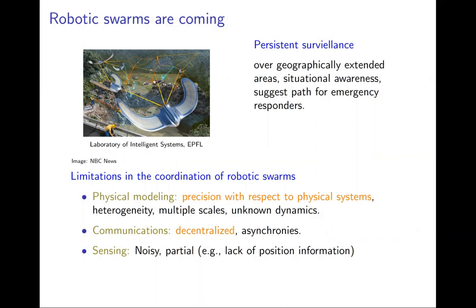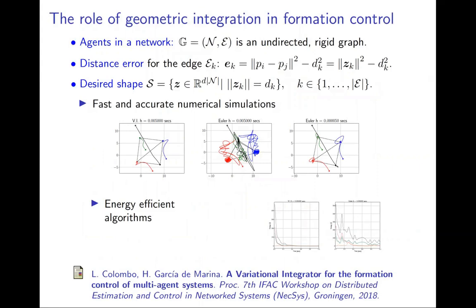Looking toward that goal, in this paper of 2018, I started to investigate the role of variational integrators as a structure-preserving method for exponential convergence to the desired shapes based on distance measurements and by comparing results with an explicit Euler method.